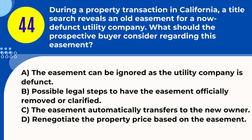Question 44. During a property transaction in California, a title search reveals an old easement for a now-defunct utility company. What should the prospective buyer consider regarding this easement? A. The easement can be ignored as the utility company is defunct. B. Possible legal steps to have the easement officially removed or clarified. C. The easement automatically transfers to the new owner. D. Renegotiate the property price based on the easement. Answer: B. Possible legal steps to have the easement officially removed or clarified. Explanation: In California, even if an easement is for a defunct company, it's important to clarify or legally remove it to avoid future complications.